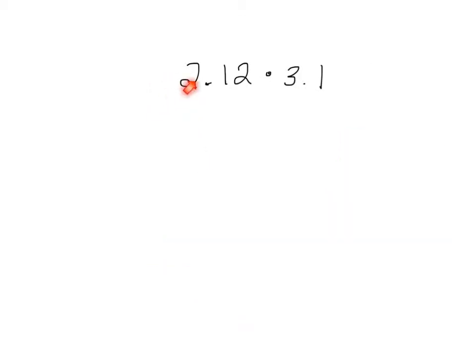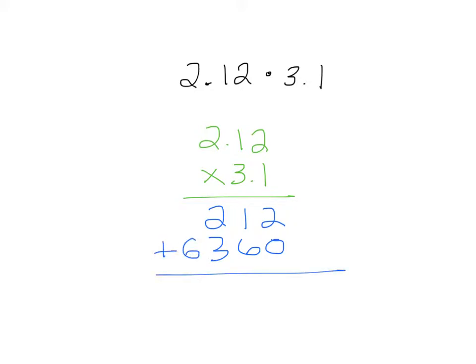For the last one, we have two positive numbers. So our answer will be positive. So we will do 2.12 times 3.1. 2 and 1. 1 times 2 is 2. 1 times 1 is 1. 1 times 2 is 2. Put a 0. Don't forget to put the 0 in when you move over to the next number. 3 and 2 make 6. 3 and 1 is 3. 3 and 2 is 6. Go ahead and add up across.